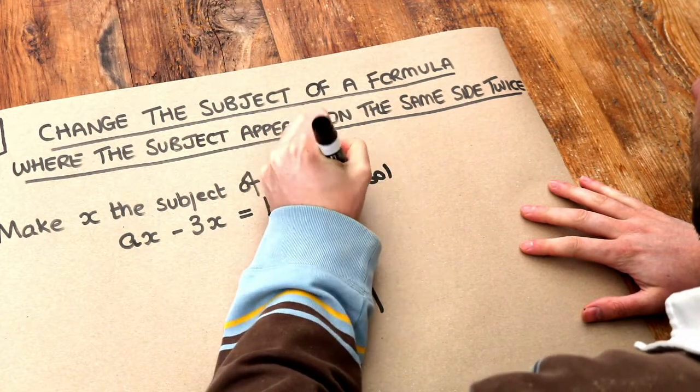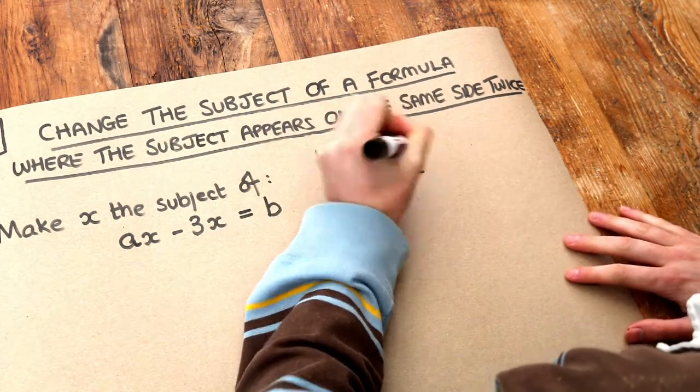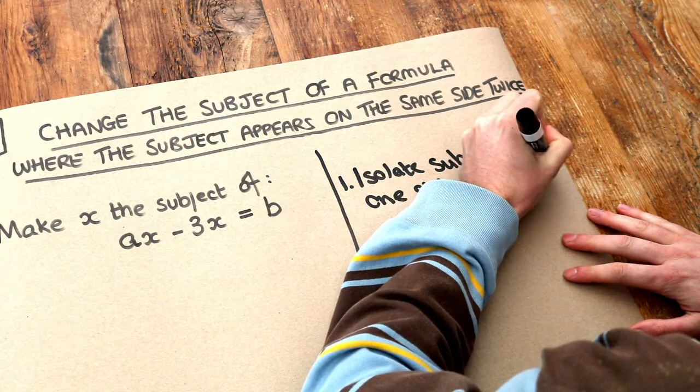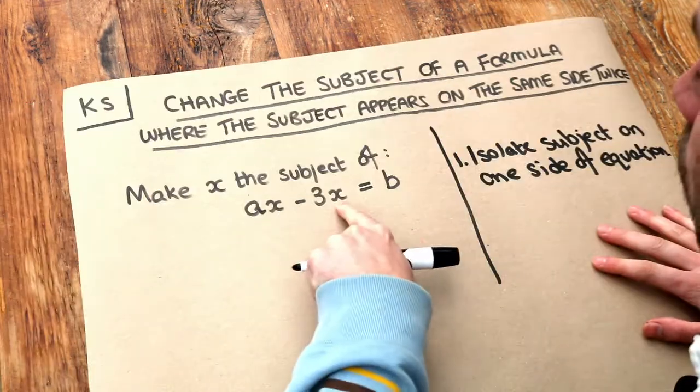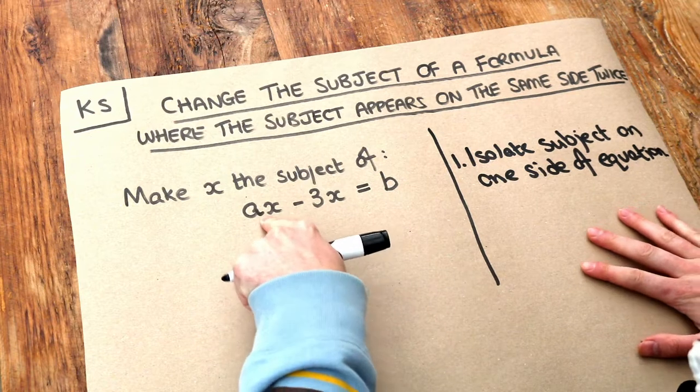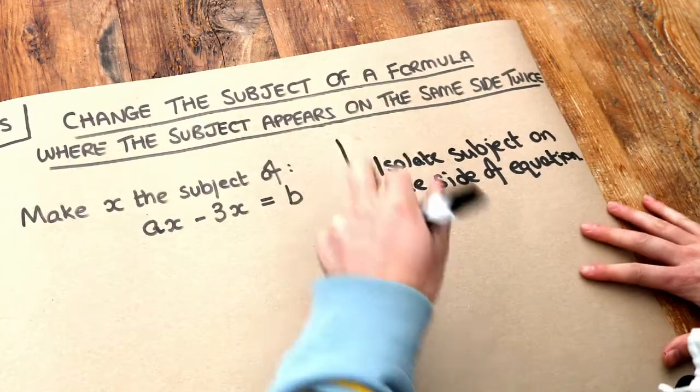First, isolate the subject on one side of the equation. Can you see that we've already done that here? All the x terms are on one side of the equation, so we've isolated them already.